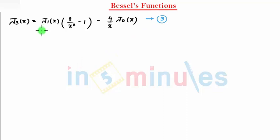Further, let n equal 3. We write J4(x) equals 6/x times J3(x) minus J2(x).